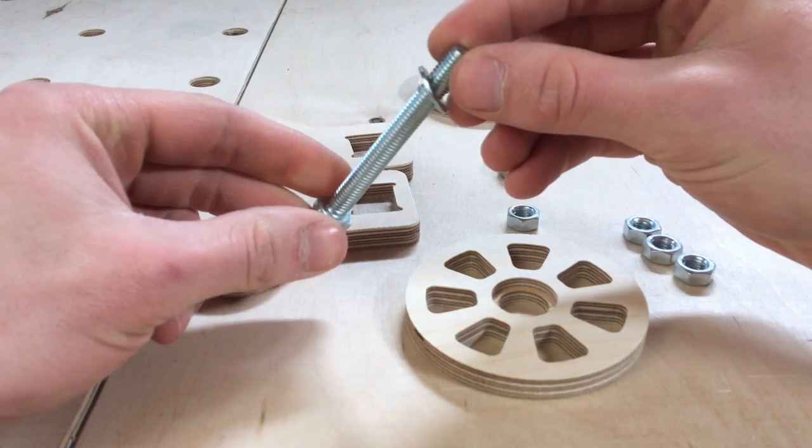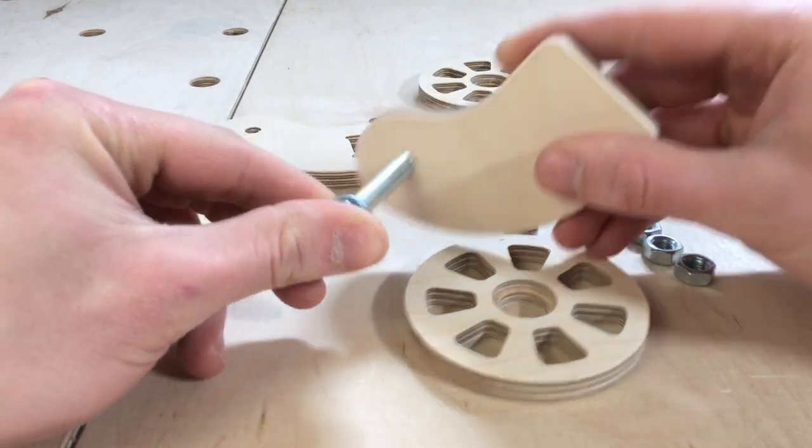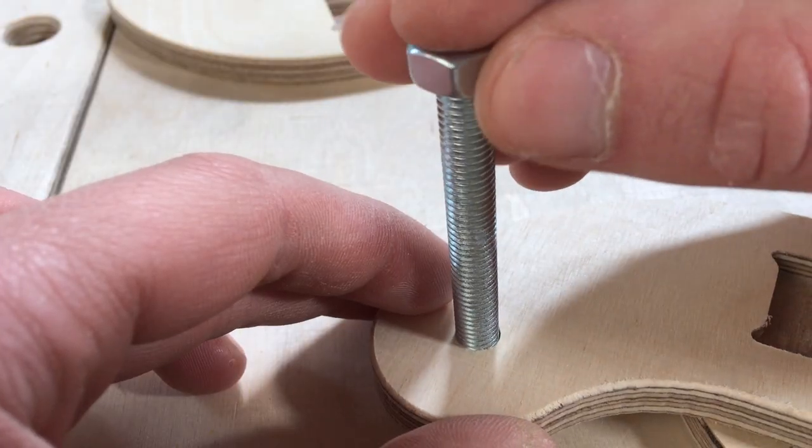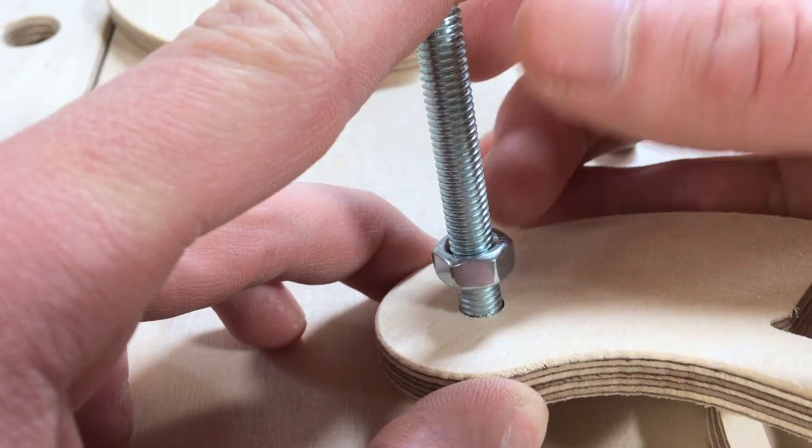To do so I added a washer to the screw and installed it in one of the sides of the caster. Then I could add an M8 nut that would help us position the bearing for the wheels.